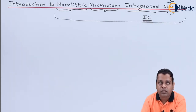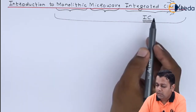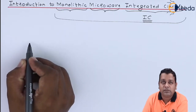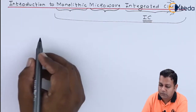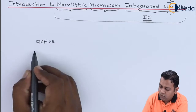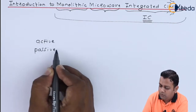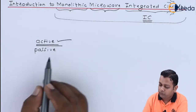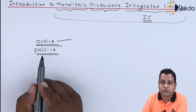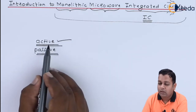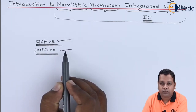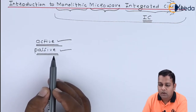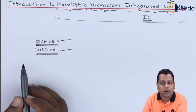Let us have a brief introduction to the background from ICs to monolithic microwave integrated circuits. Integrated circuits basically have two types of components: active components and passive components. Those components that generate energy are called active, whereas those components that process the signal generated by active components are called passive. Integrated circuits have a combination of both, on a semiconductor platform.